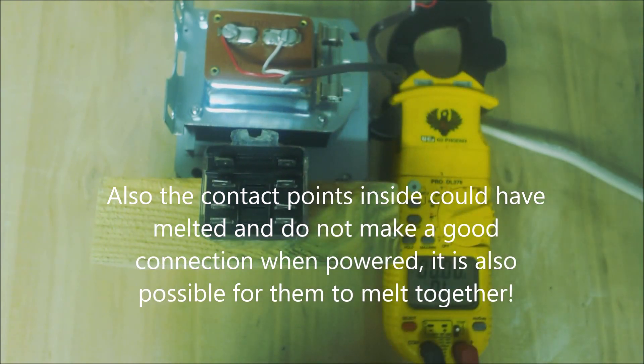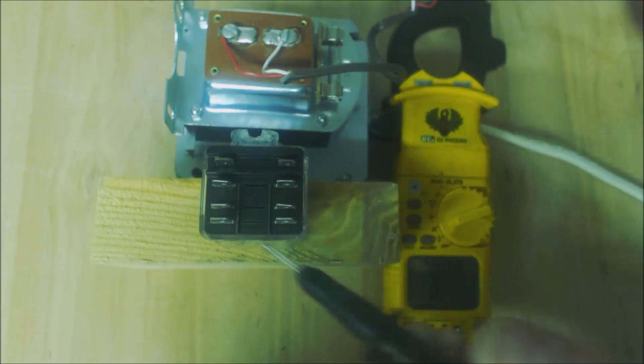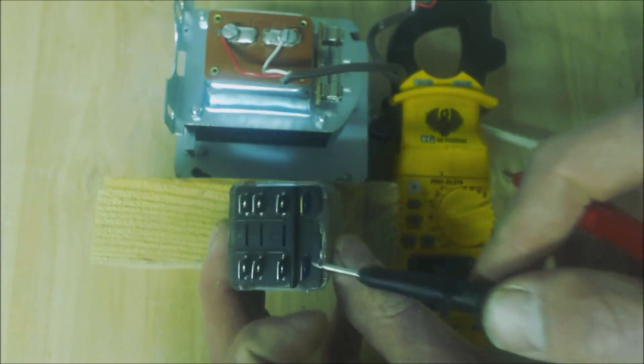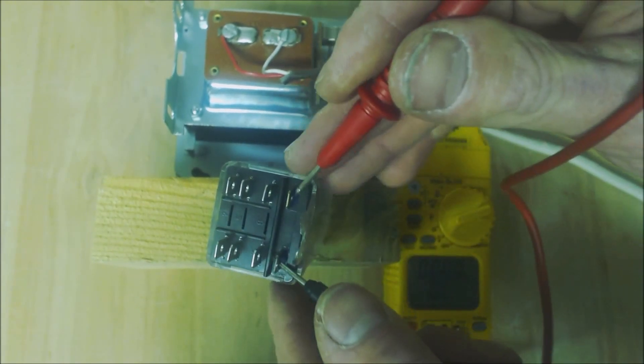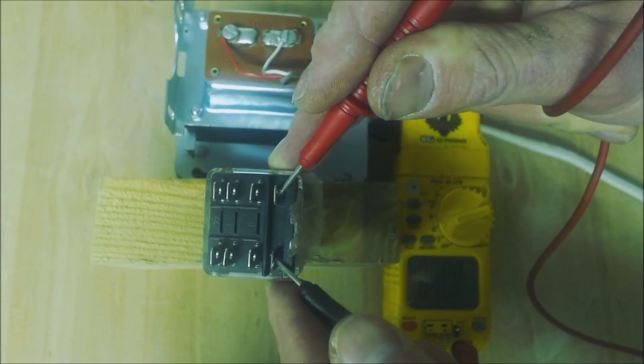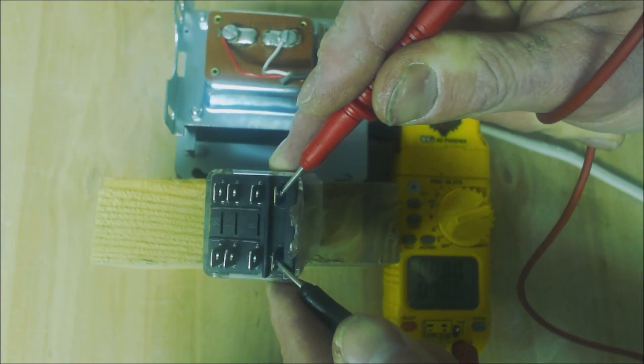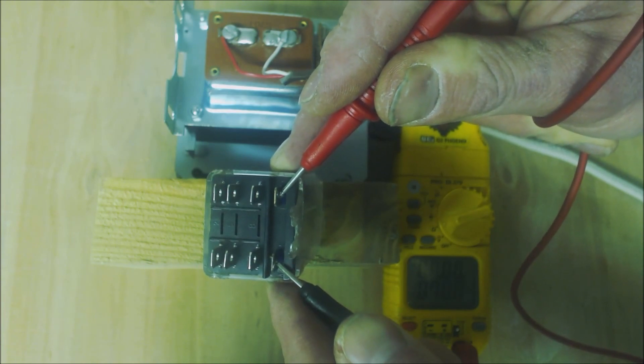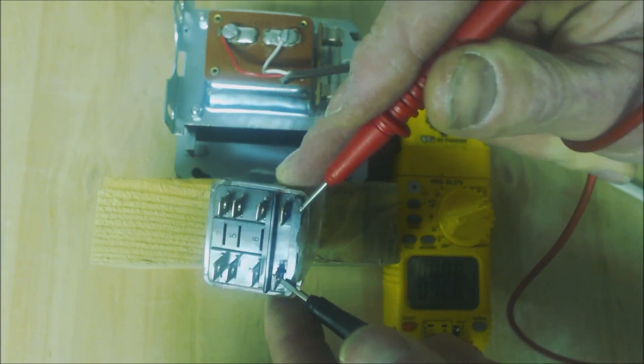Most components you can test with resistance to tell if they're bad. You see it has 70 ohms of resistance. That's the coil.